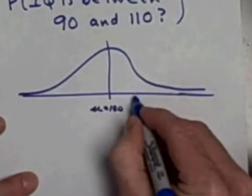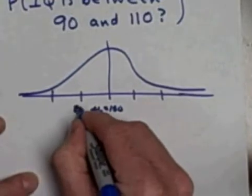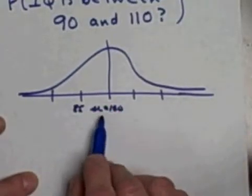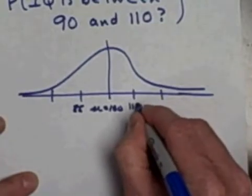This is mu equals 100. Put a couple standard deviations on either side since I'm going down to 90. This is 85 since the standard deviation is 15. Fifteen away is 85 and to the right is 115.